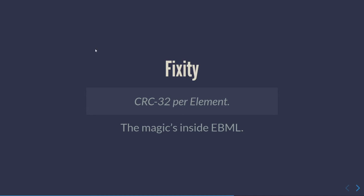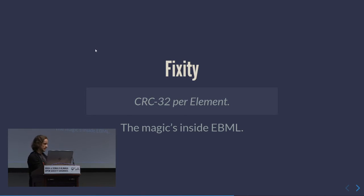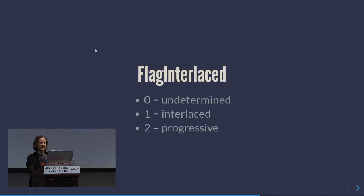Outside the video stream, Matroska has CRC in its structure, so it knows if its technical structure and metadata are intact. The same principle: metadata and structure elements have CRCs, and the decoder can know whether it's getting valid or invalid data. For preservation you want this, and by default it's enabled. Matroska also stores scan type in two fields: whether it's interlaced or progressive, and then more specifically top field first, bottom field first, or the swapped variants.